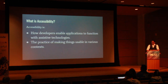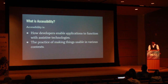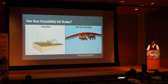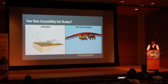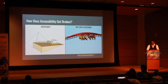Accessibility practices help everyone in every context. So how does accessibility get broken? It gets broken by making uninformed choices. On a webpage, that means making uninformed choices with JavaScript, CSS, and even HTML.